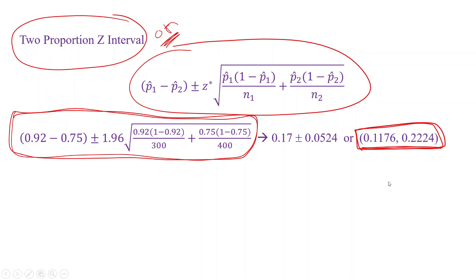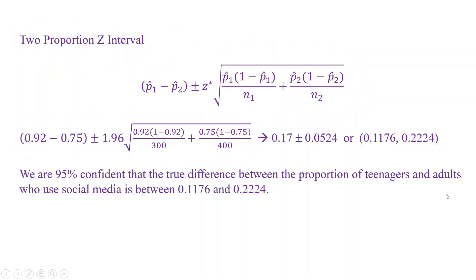The fourth C is conclude. We are 95% confident that the true difference between the proportions of teenagers and adults who use social media is between 0.1176 and 0.2224. We don't need to draw any extra conclusions since the problem didn't ask about a claim or hypothesis test — we just interpret what the confidence interval means, and we're done.